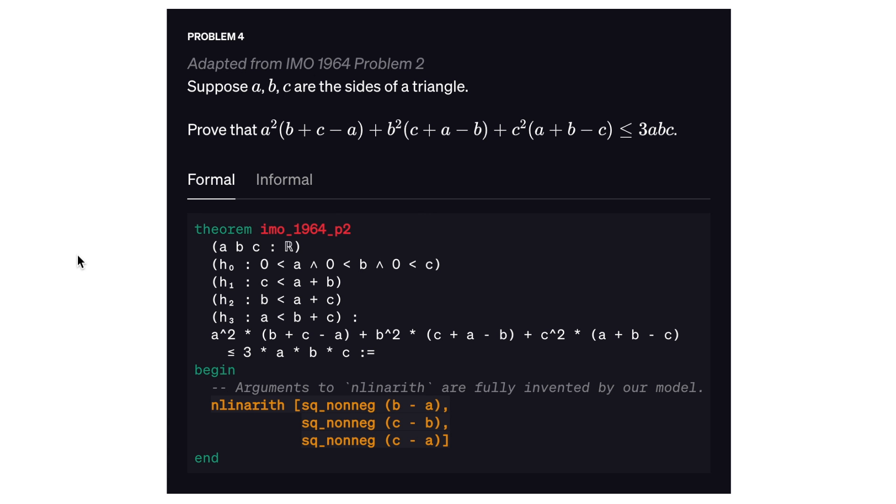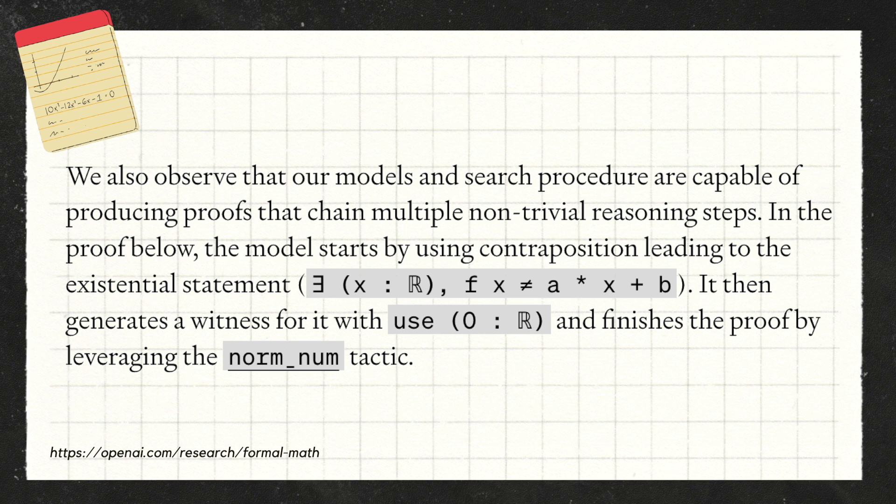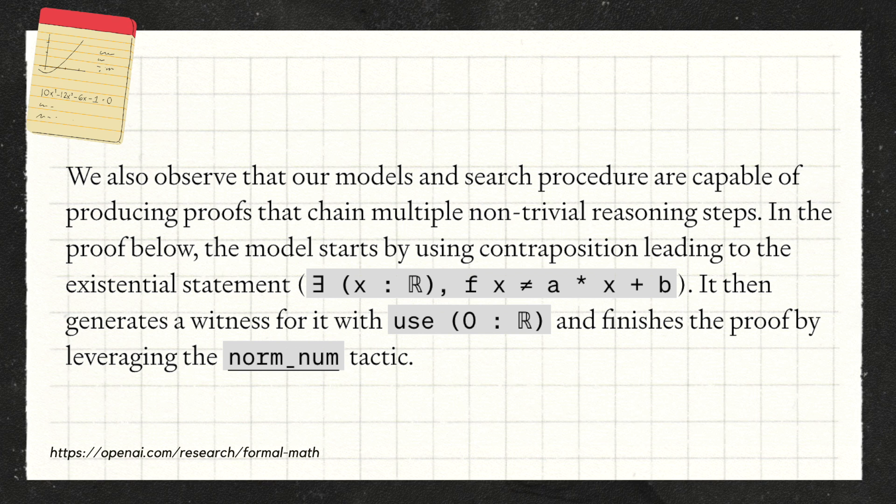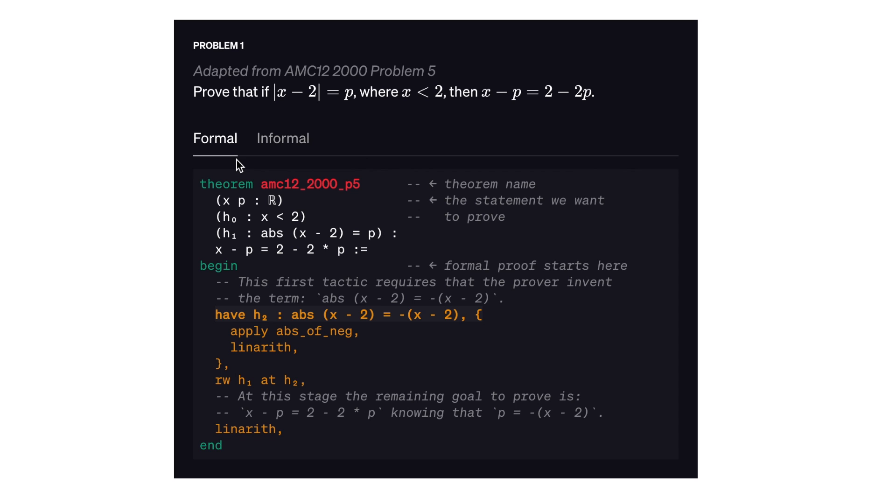This is what the formal math language looks like—it's not too easy for a human to read, but it's probably our best bet when creating a system that is actually useful to mathematicians. It uses something called the Lean theorem prover. The proofs that it creates are machine-checkable, following a series of logical laws. They say that their model and search procedure are capable of producing proofs that chain multiple non-trivial reasoning steps, and it does require some creativity to invent lines like this.